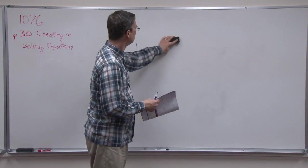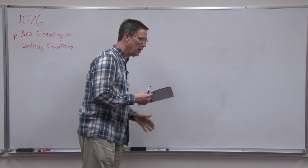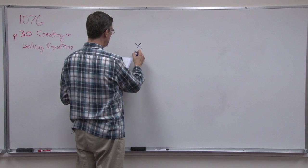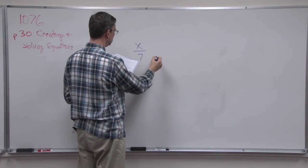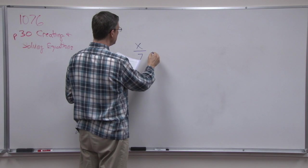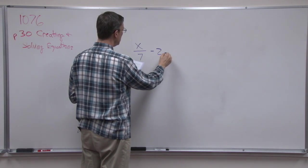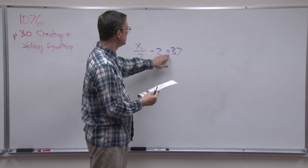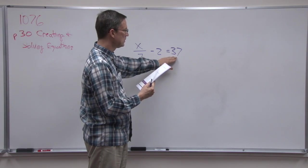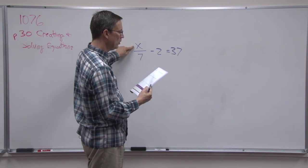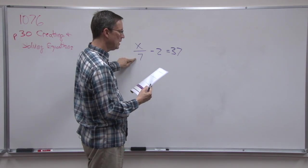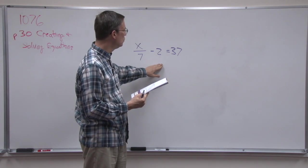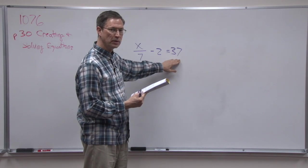Let's look at question number 2. A certain number divided by 7, less 2, so take away 2, is 37. So again, the is tells us that 37 comes after the equals. A certain number, we don't know, is being divided by 7. The less 2 means I'm going to take away 2 equals 37.